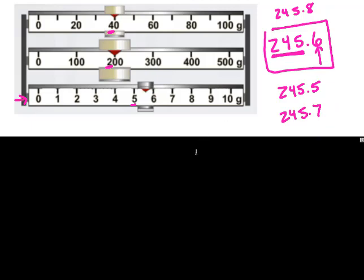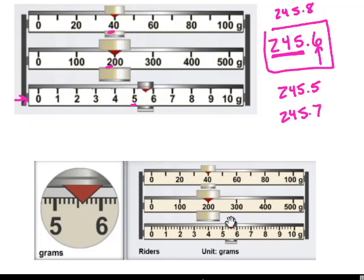Looking at that same triple beam balance, but now if I have this zoomed in image and it actually has all these gradations between the 5 and the 6, I can make a more accurate measurement. I'm going to pause the video and record what answer you think this mass should be recorded as. Restart when you have your answer recorded.